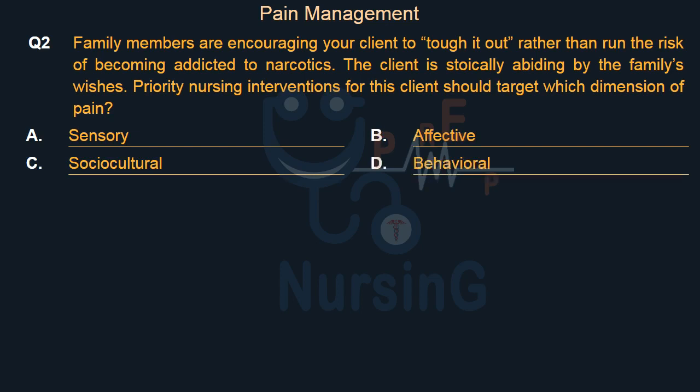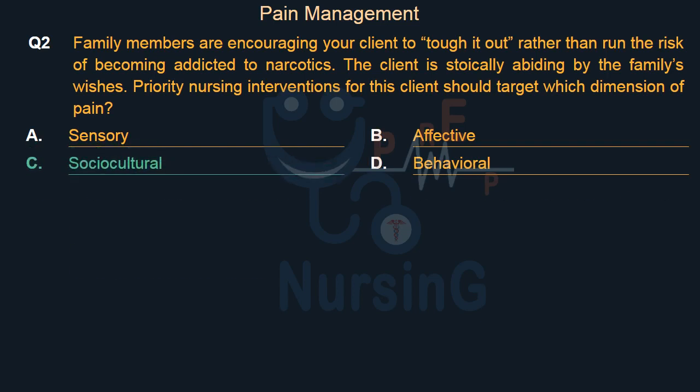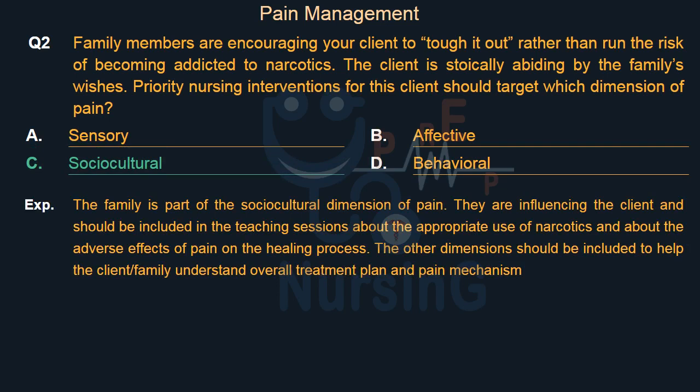Right answer is Option C: Sociocultural. The family is part of the sociocultural dimension of pain. They are influencing the client and should be included in teaching sessions about the appropriate use of narcotics and about the adverse effects of pain on the healing process. The other dimensions should be included to help the client and family understand the overall treatment plan and pain mechanism.